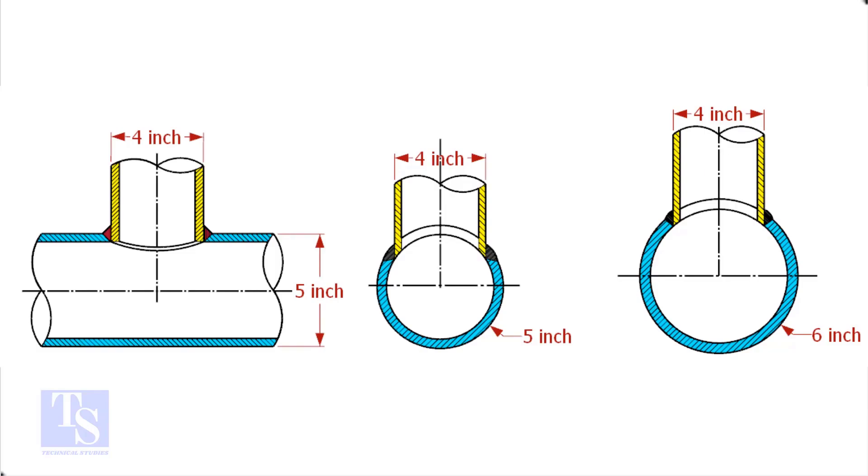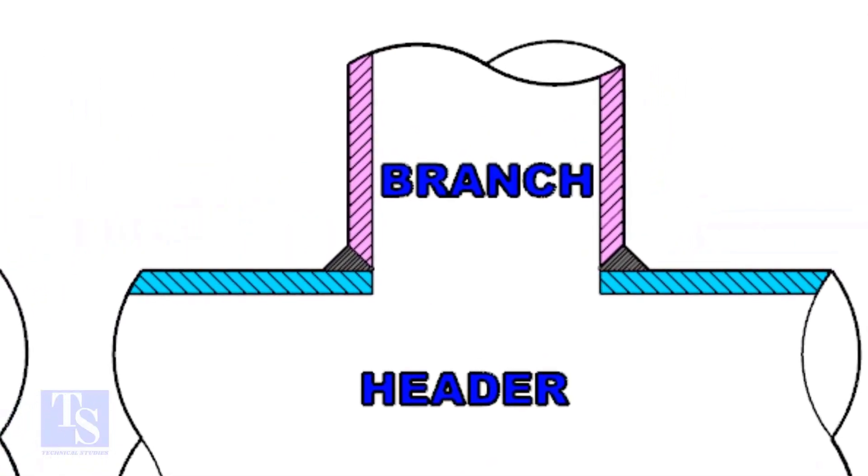Watch the section side view carefully. Check the stub-on view. The branch pipe sits on the header. The cut-back cutting of the branch pipe is done and the bevel also is prepared.